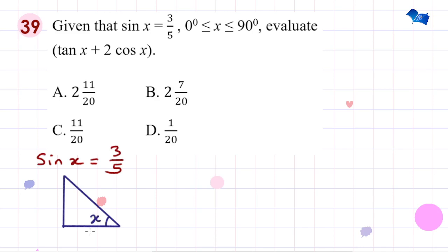If this is angle x, sine x is opposite over hypotenuse. From here you can see the opposite is 3 over hypotenuse, which is 5. Now what would be the length of this third side of this right angle triangle?